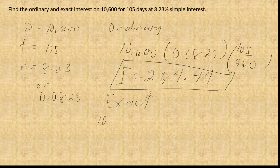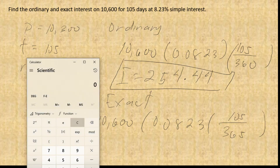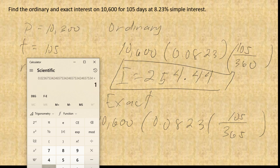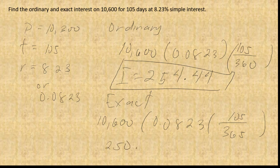For exact interest on the same problem: P is 10,600, rate is 0.0823, and time is 105/365. Using the calculator: 105 ÷ 365, multiply by 0.0823, then multiply by 10,600. Do not round off until the final answer. Rounding to 2 decimal places — since the next digit is 8, we round up — giving 250.96. So exact interest equals 250.96.